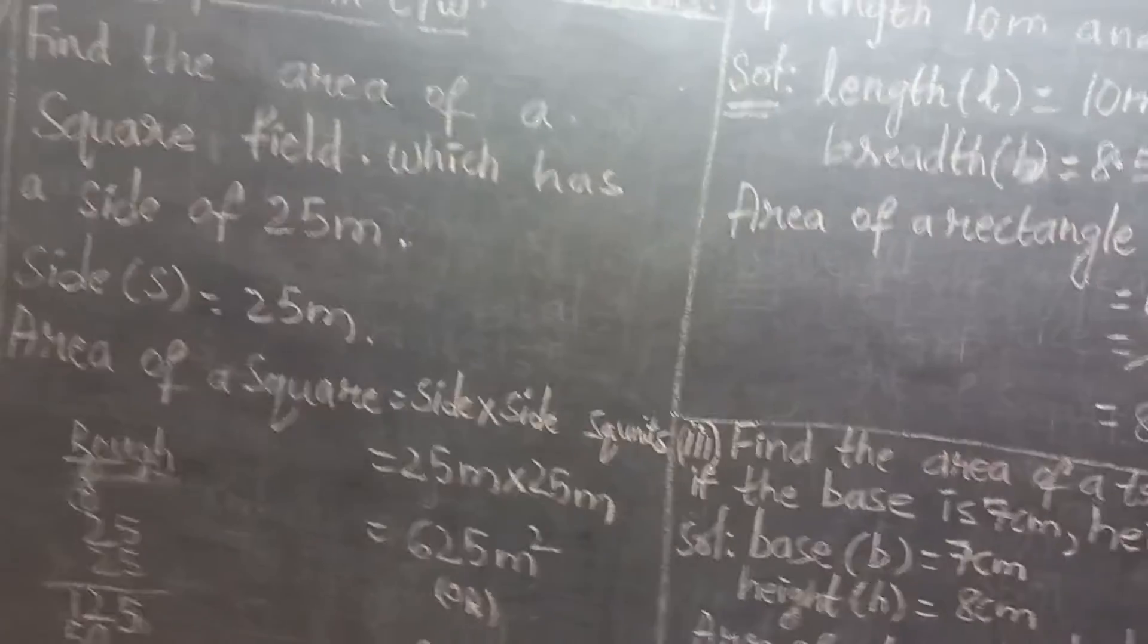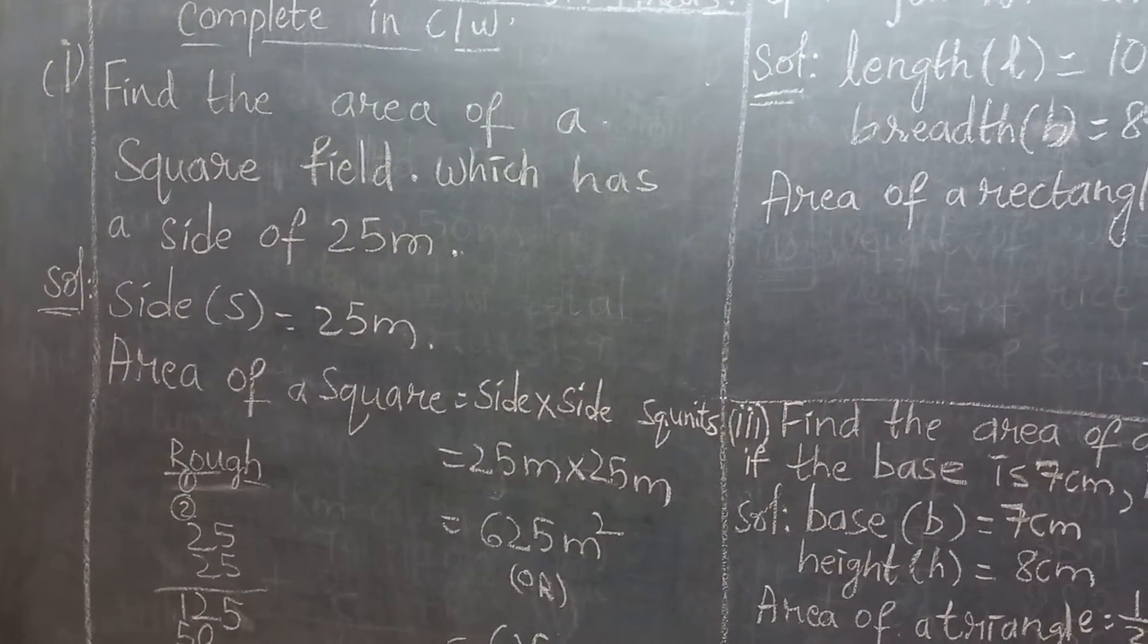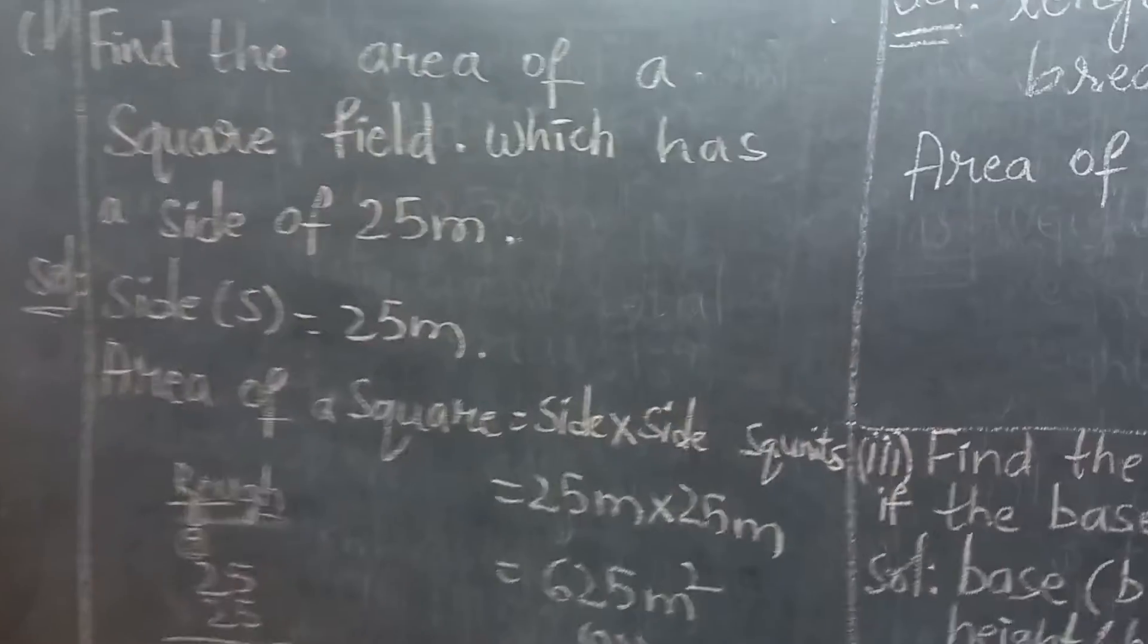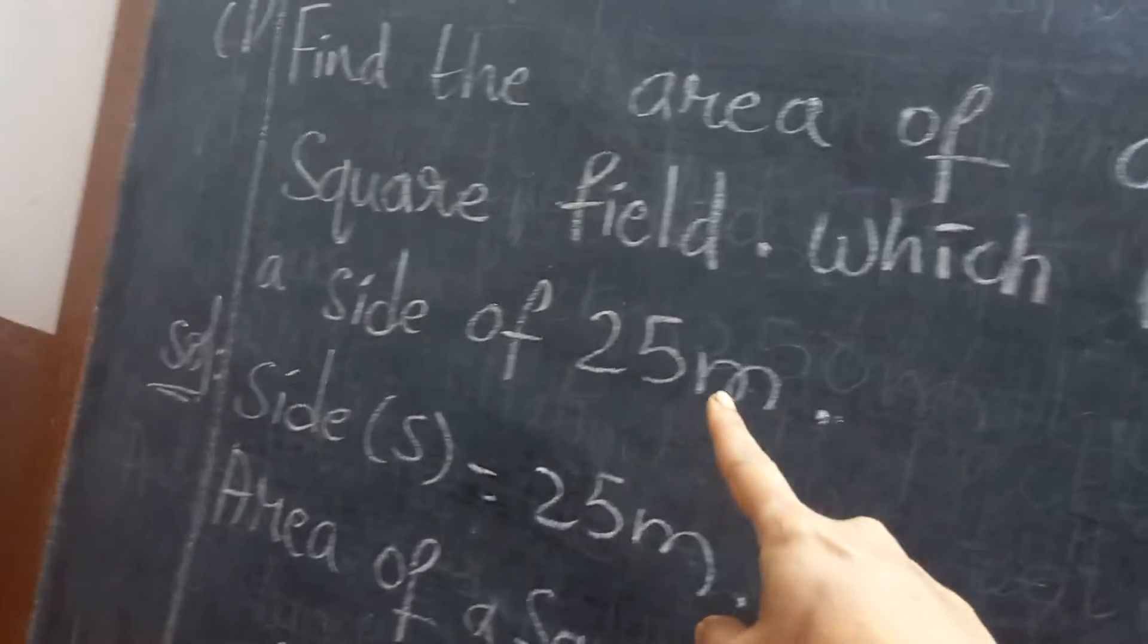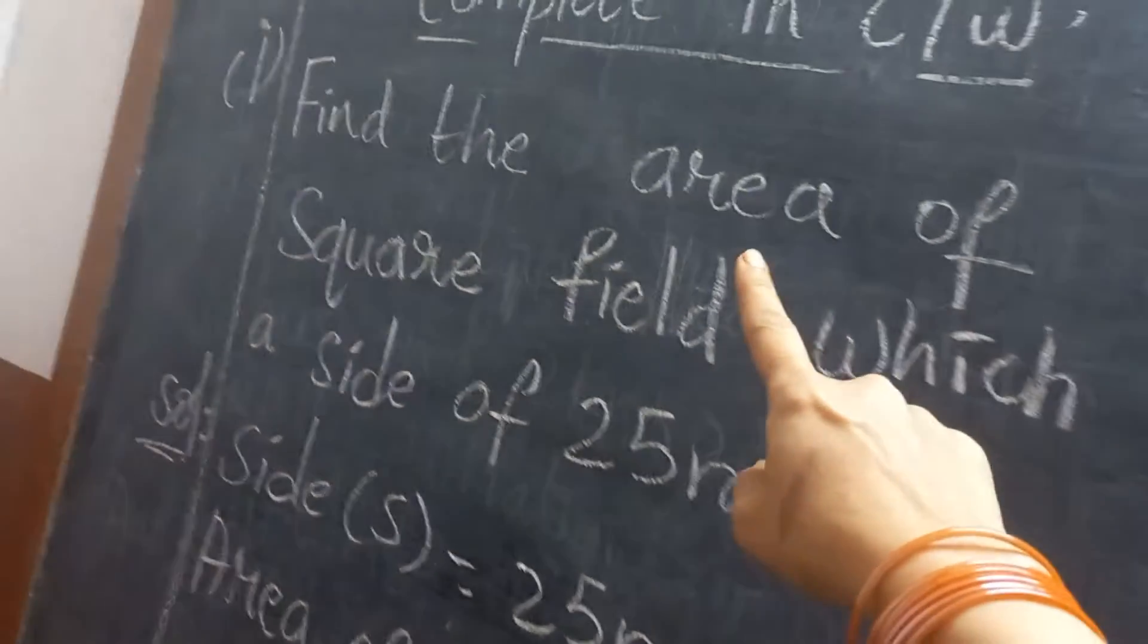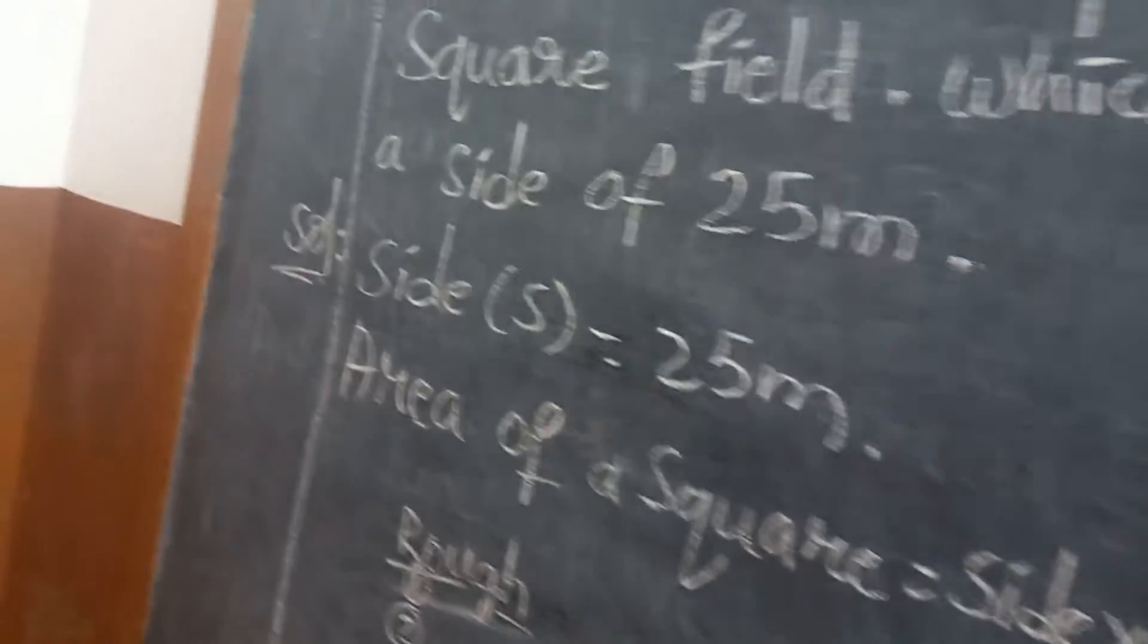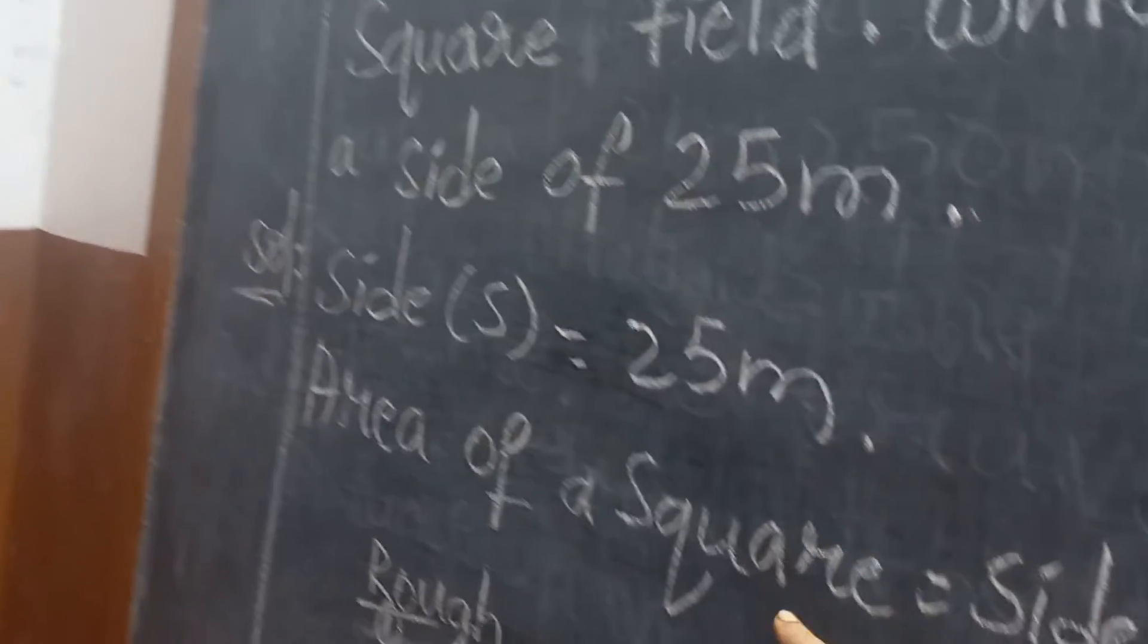Now, we are doing the formulas. We know the formulas now. We will find out the values. Find the area of square field. What is the area of square field? Which has a side of 25 meters. 25 meters का side दिये वो लोग. हम लोगों को क्या find करना है? Area find करना है. Side is given as 25 centimeters.